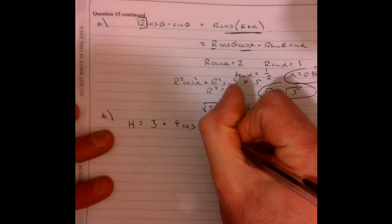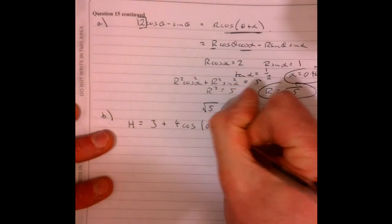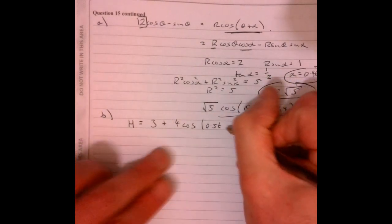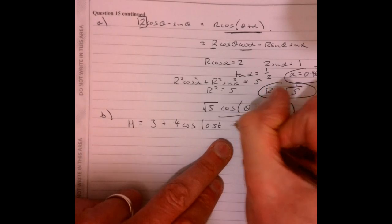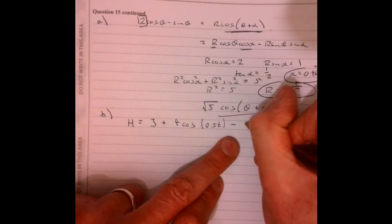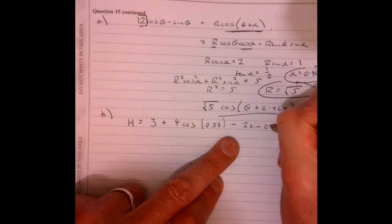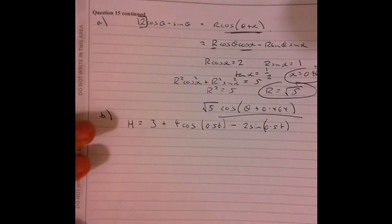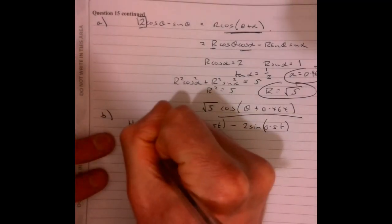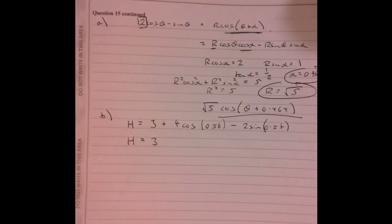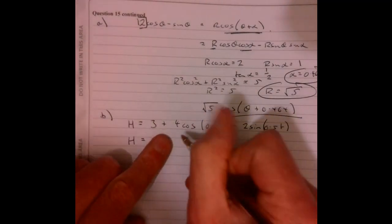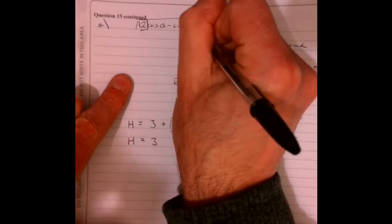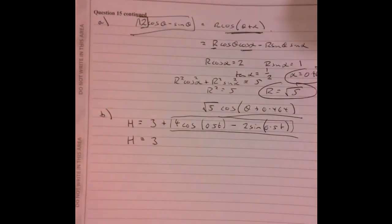But let's just write down what that is actually given us. So this is just from the question. H equals 3 plus root 5 cos 0.5T minus 2 sine 0.5T. That was just the question.